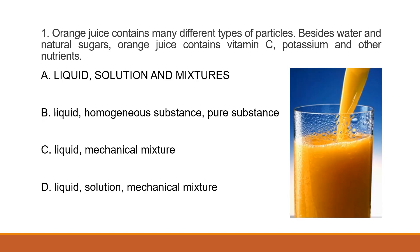Question 1: Orange juice contains many different types of particles. Besides water and natural sugars, orange juice contains vitamin C, potassium, and other nutrients. A. Liquid solution and mixtures. B. Liquid homogeneous substances, pure substances. C. Liquid mechanical mixture. D. Liquid solution and mechanical mixture.